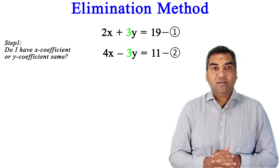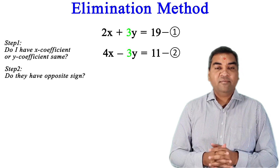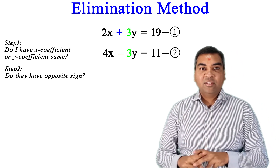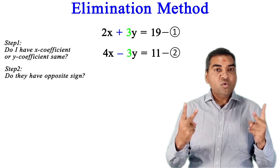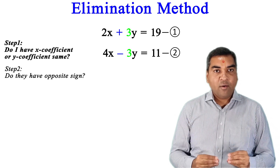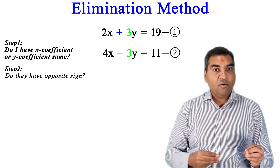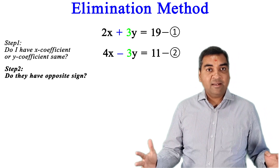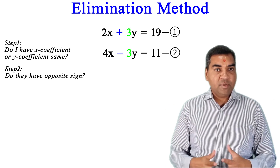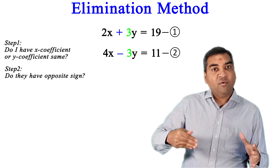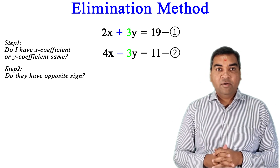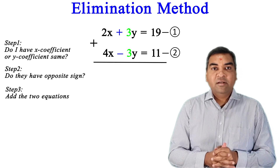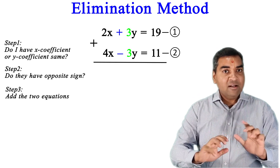Step two: ask yourself, do they have opposite signs? Looking at the y coefficients, we have 3 and -3, so yes, they have opposite signs. These are two compulsory requirements. If they are not met, you will need to create them. In this question, both requirements are met — the y coefficients are the same and they have opposite signs.